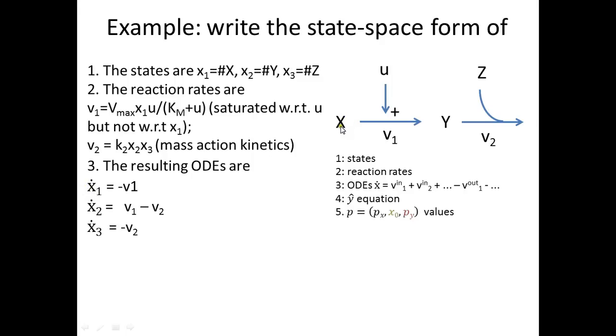And for x2 which is Y here we have one ingoing reaction v1 so it's plus v1 and one outgoing reaction so it's minus v2. And x3 which is the concentration of Z there is one outgoing reaction so it's minus v2.